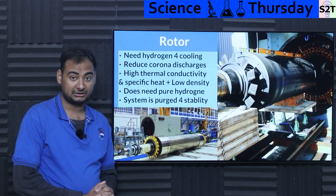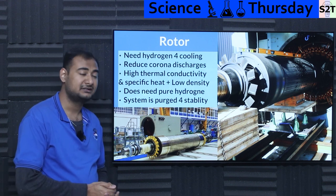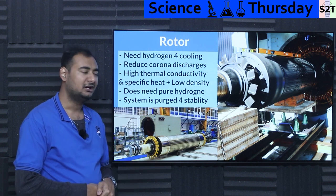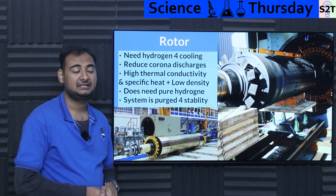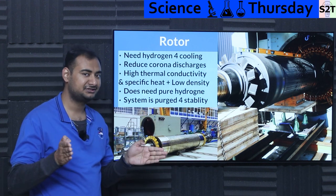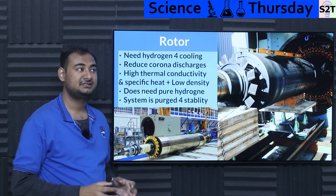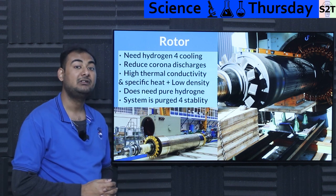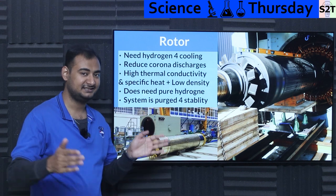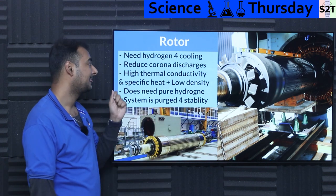The main rotating element is the rotor, and it requires hydrogen for cooling. These generators started very small — around 1 megawatt — but now we have generators in India that are 800 megawatts. A single generator unit. Some designs even exceed 1 gigawatt rating. So they need hydrogen for cooling.